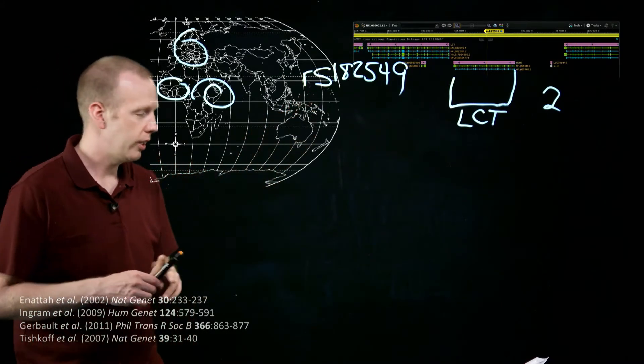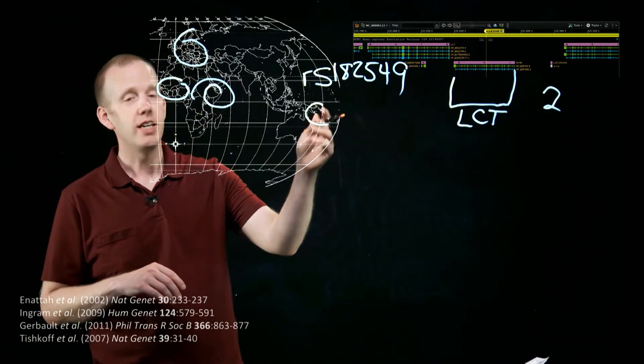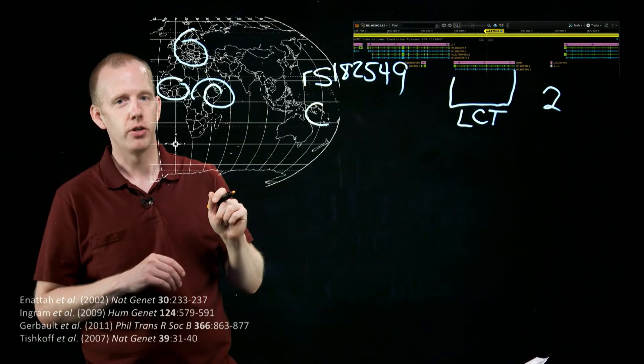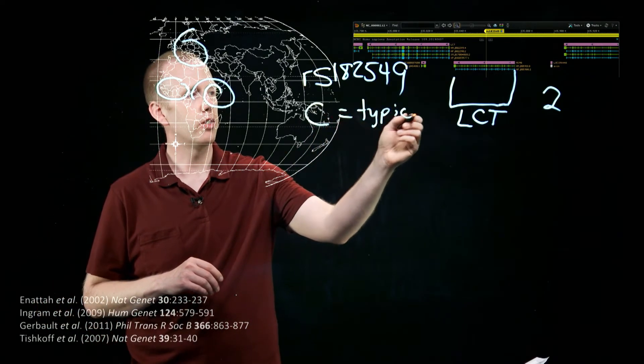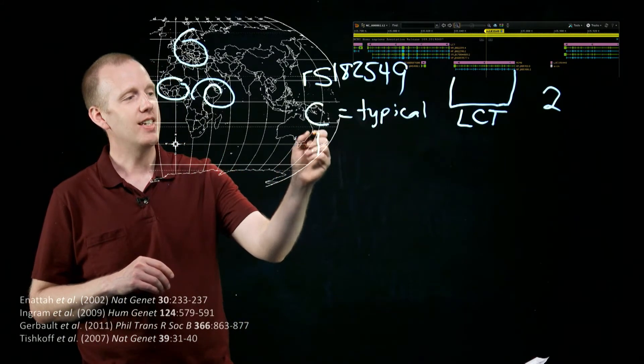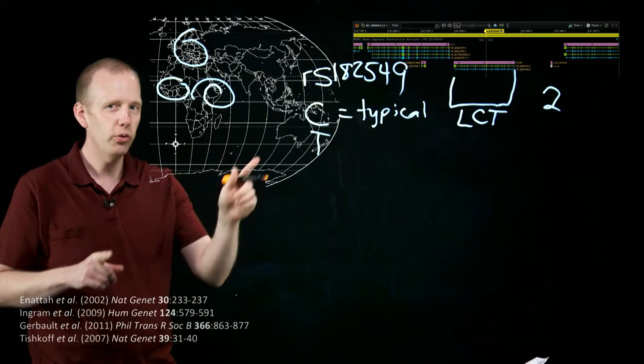And it turns out this single nucleotide polymorphism has two forms. You can either have a C at this specific spot in your genome, and that's the common or typical form that leads to lactose intolerance. If you have a T, instead of a C, at this one spot,